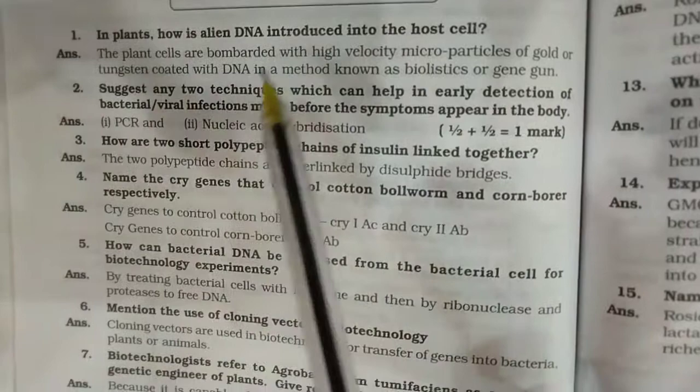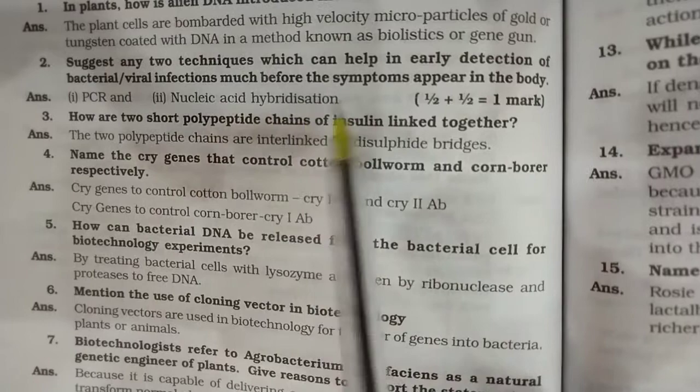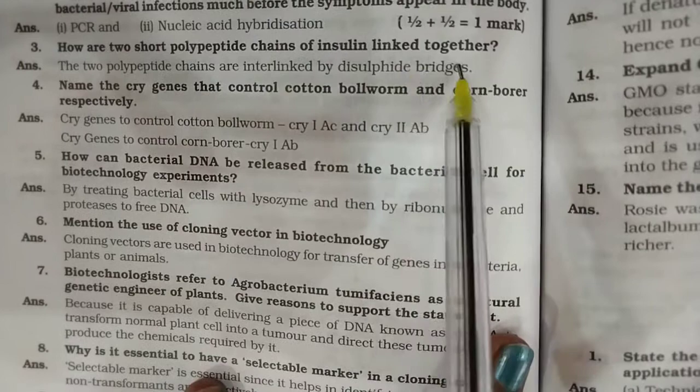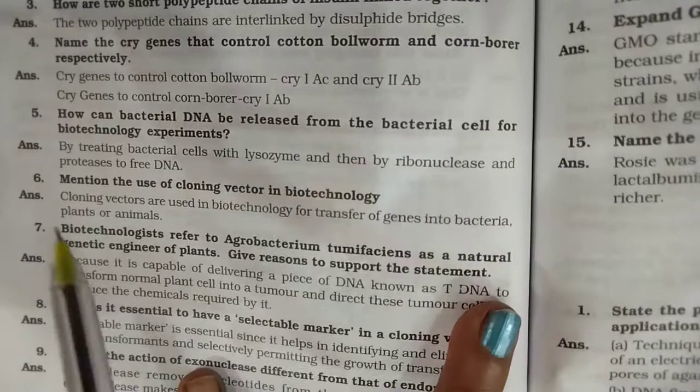Question one: In plants, how is alien DNA introduced into the host cell? Question two: Suggest any two techniques which can help in early detection of bacterial or viral infections much before the symptoms appear in the body. Question three: How are the two short polypeptide chains of insulin linked together?